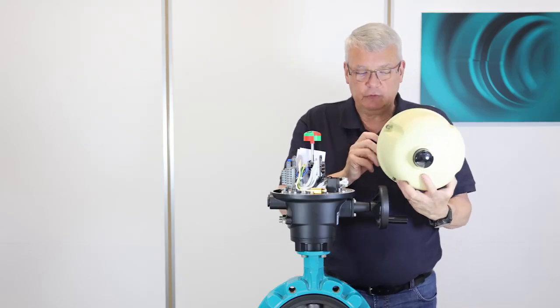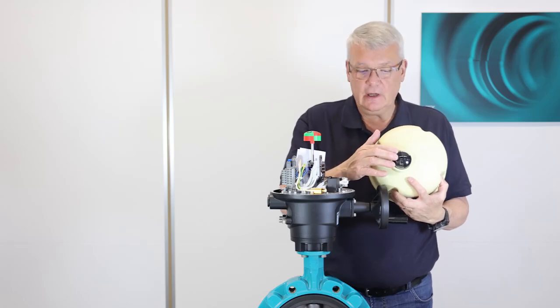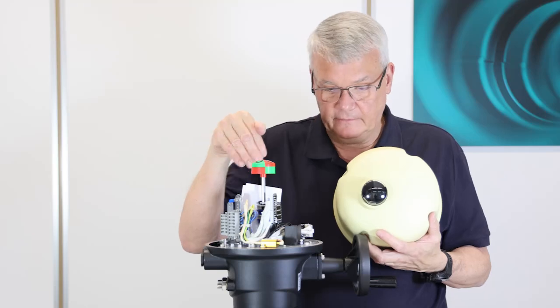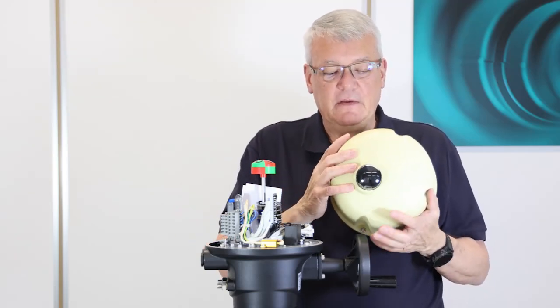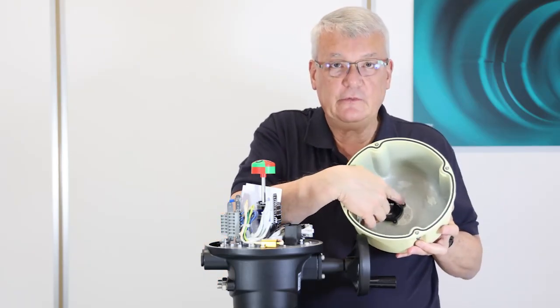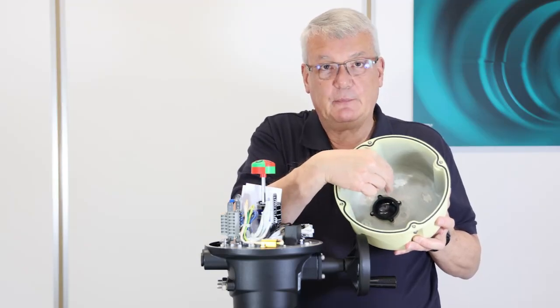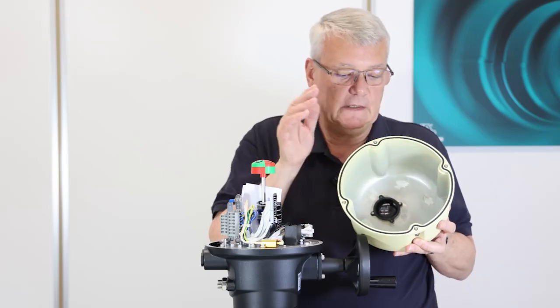Important to notice is to check if the position indication corresponds to the position of the valve and the disc. This is the case here, but if not, we simply would have to unscrew these two small screws here inside, turn the cap by 90 degrees, and re-screw it in the cover.